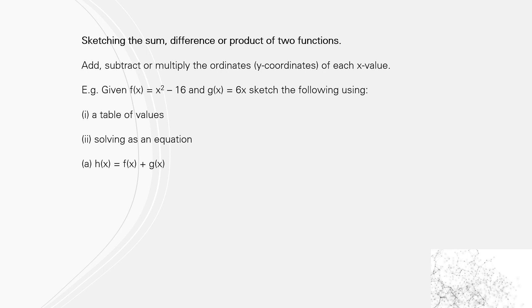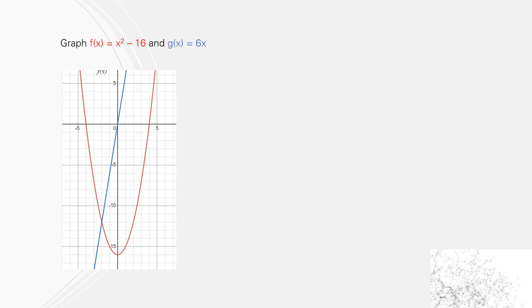So here's our first one. We're going to add the two functions together. So this we'll use each time at the start of each one. The red is x² - 16—you'll see it passes at -4 and 4, and its turning point is at -16 on the y-axis. And 6x is a straight line, gradient 6 passing through the origin.